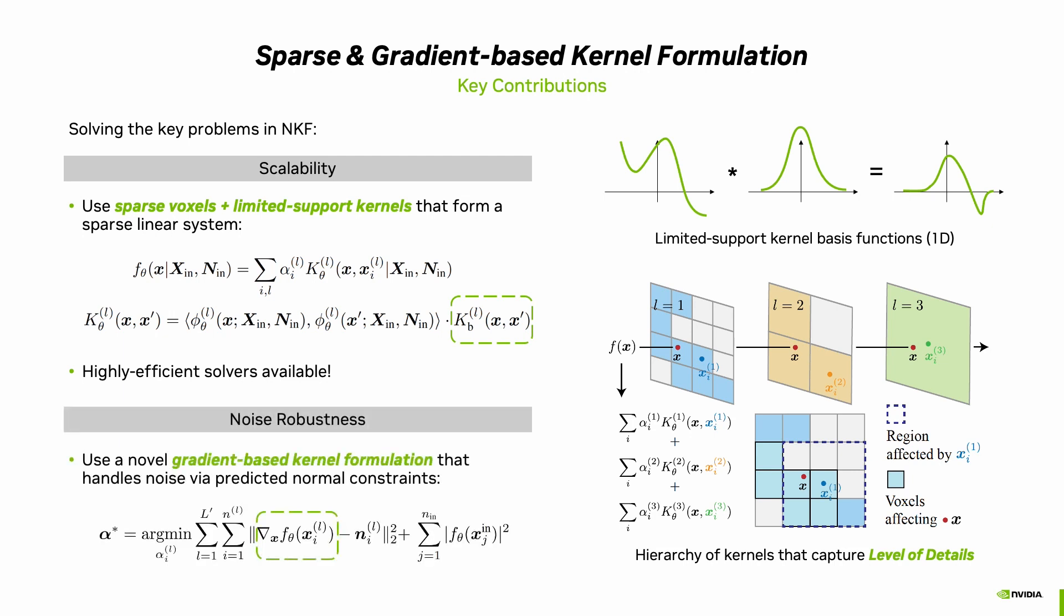Second, to enhance noise robustness, in addition to the positional constraints, we introduce a novel gradient-based kernel formulation. This formulation requires the gradient of the implicit function to match the normal constraints predicted by neural networks. While the normal constraints allow for a smoother implicit function, surface details are incorporated into the system using the complementary positional information. This problem can be efficiently transformed into a single linear solve, and the left-hand side matrix is sparse due to the range-limited interaction between kernels. We employ a highly efficient preconditioned conjugate gradient solver to obtain the coefficient alpha in practice.